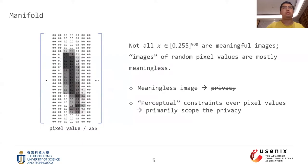Now let's take a closer look at this image. Here I display its pixel values. It's clear to see that in the 900-dimensional pixel space, not all images are meaningful, because randomly sampling pixel values mostly generates noise. If an image is meaningless, then it is not private. At the same time, to form meaningful contents like the digit 1, there exist some constraints over pixel values. We call these constraints the perceptual constraints, and they scope the contents of media data, which are the privacy in the context of side-channel analysis for media software.